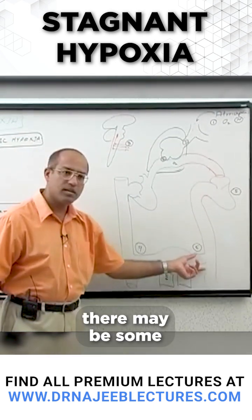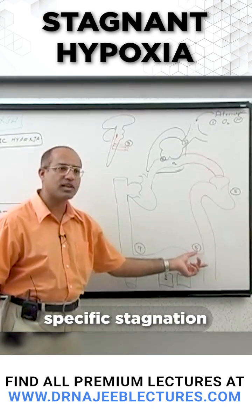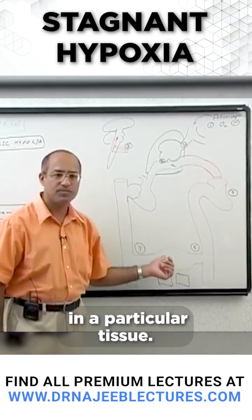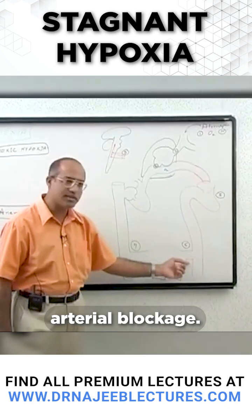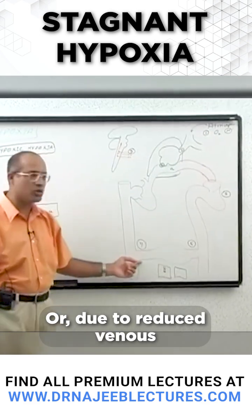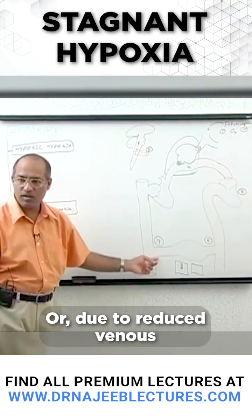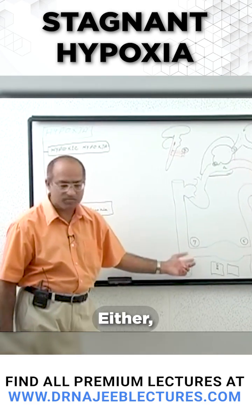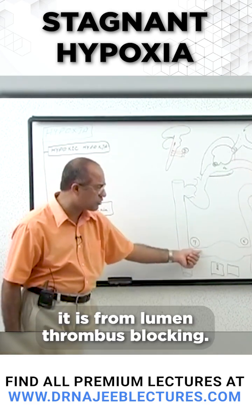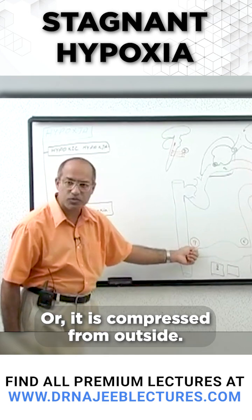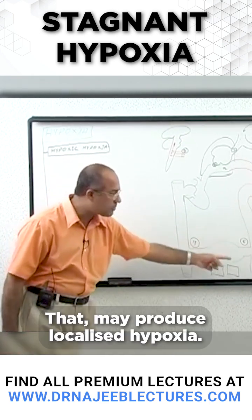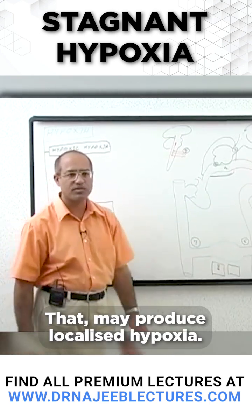Or there may be some localized, specific stagnation of the circulatory system in a particular tissue — either due to arterial blockage or due to reduced venous output, venous blockage. Either it is from thrombosis blocking or it is compressed from outside, such as cancer compressing or whatever. That will produce localized hypoxia.